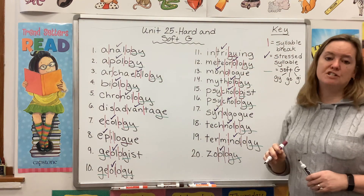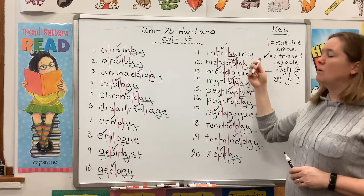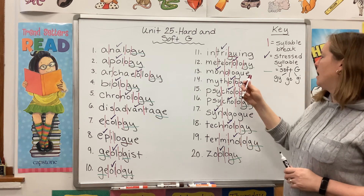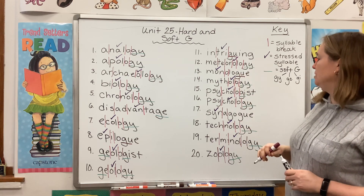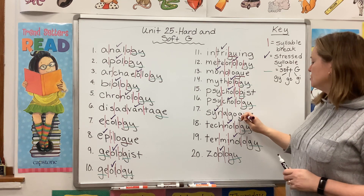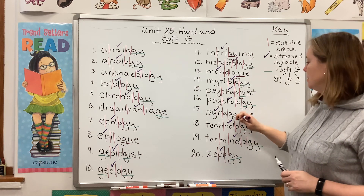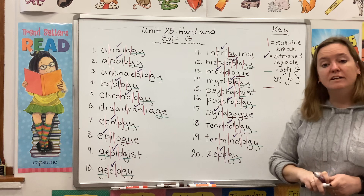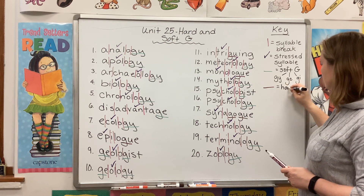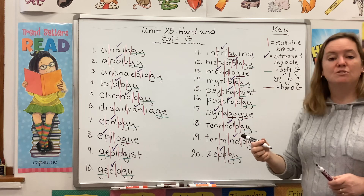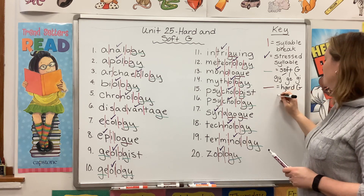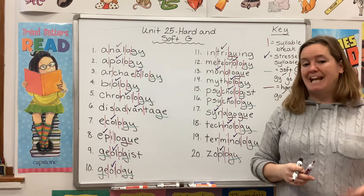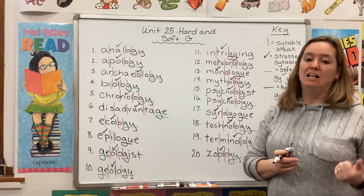Intriguing — there's a hard G followed by U. I'm going to ignore that G because that's part of the N-G, a whole different pattern. Monologue, G-U. Synagogue, G-U, and also G-O. So hard G on our list this week is followed by an O or a U. It can also be followed by an A or a consonant like L or R.